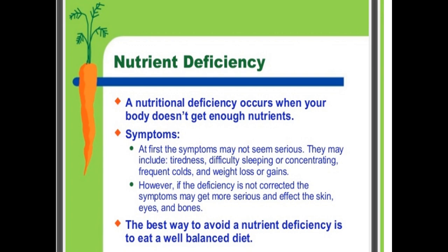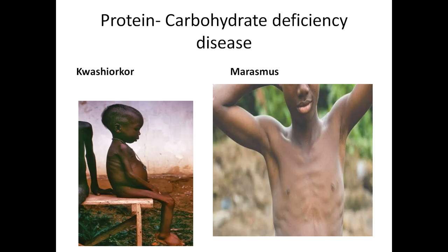Let us now learn a few deficiency diseases from this chapter. First, I have discussed protein-carbohydrate deficiency diseases. You already know that carbohydrates are energy-giving foods and proteins are body-building foods. The diseases caused by deficiency of these two nutrients are Kwashiorkor and Marasmus.